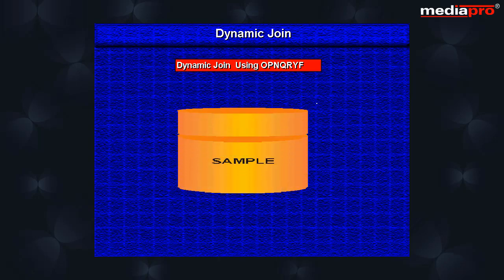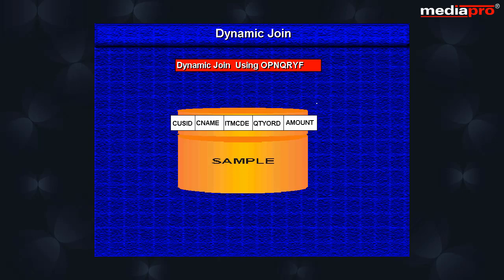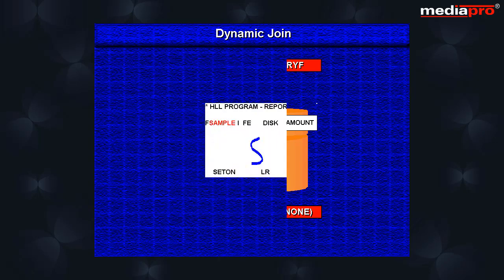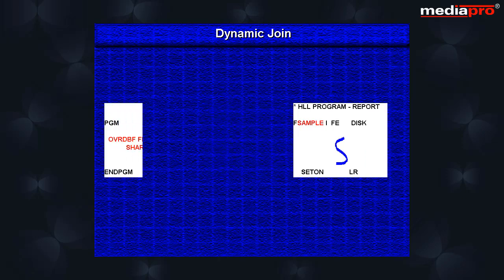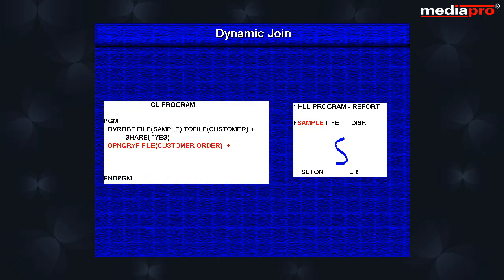First we create a physical file named sample that contains the required fields, as in the previous example. Remember to set the members parameter to none. Next we code the application program to use the new file sample. Then we use the override database file command to override the sample file with the primary file in the join, in this case the customer file.